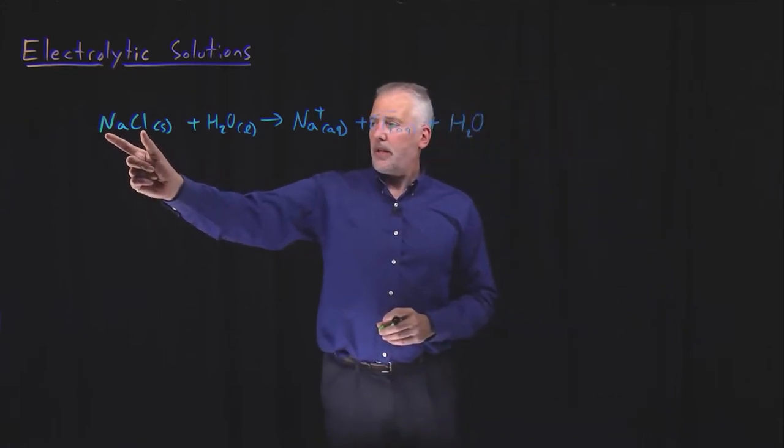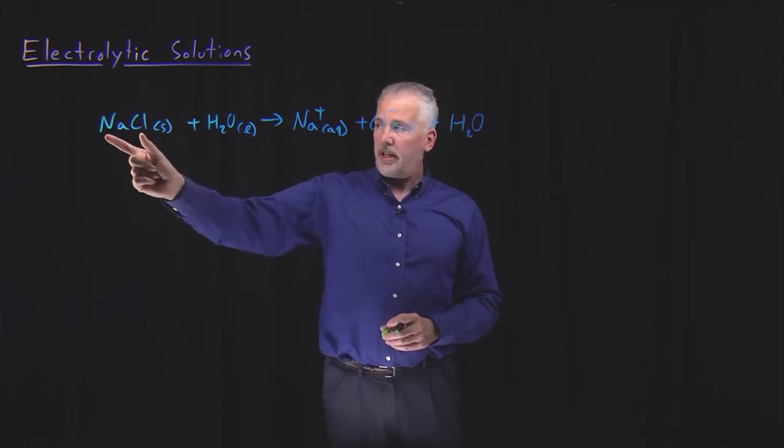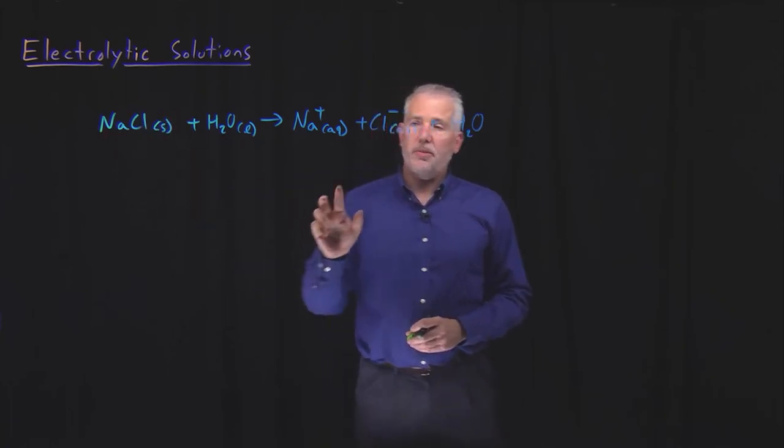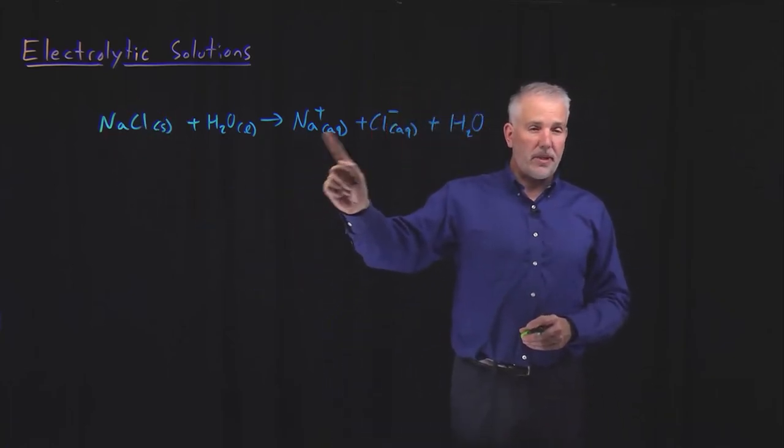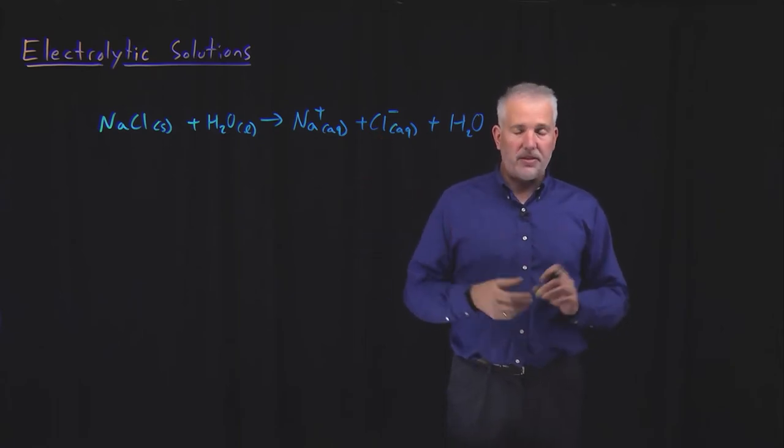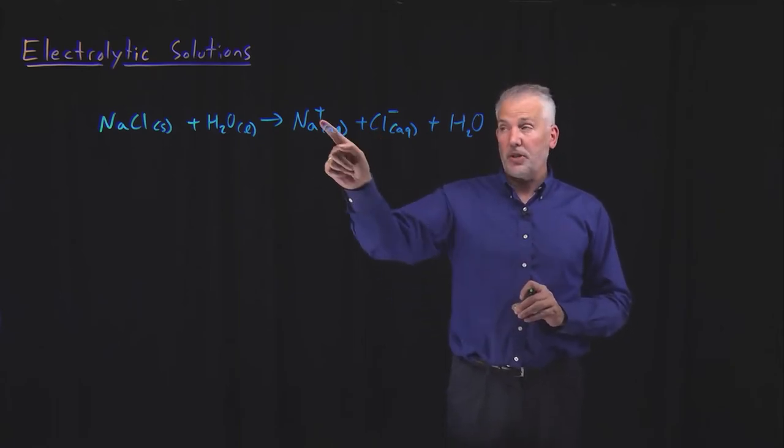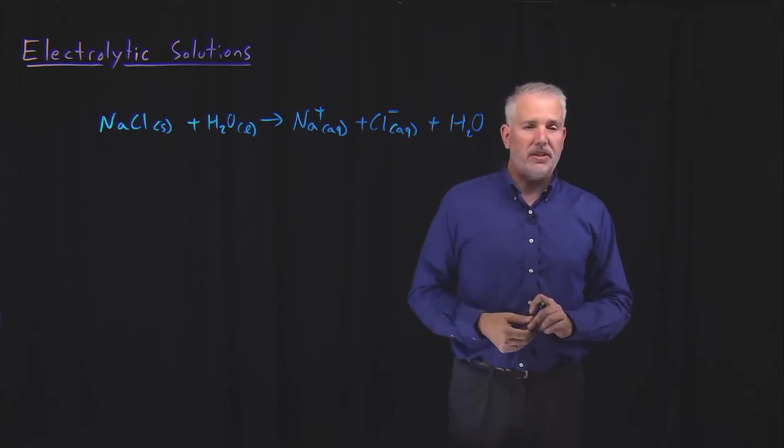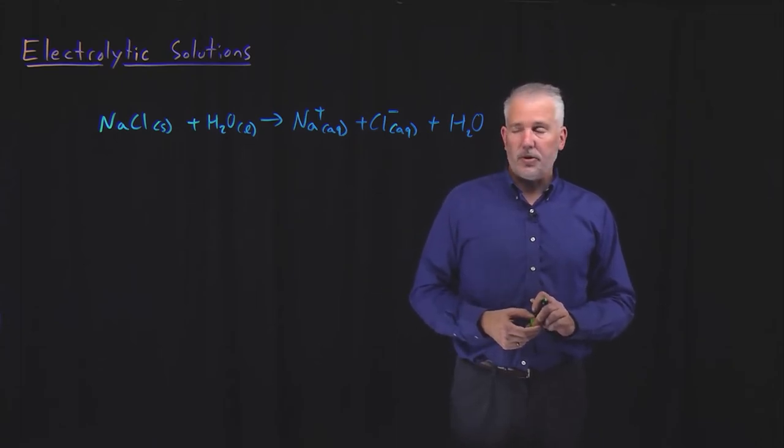Point being that my sodium chloride as a solid has become two different species, sodium ions and chloride ions in solution. The fact that it dissociates in solution makes it an electrolytic, dissociates into ions in solution makes it an electrolytic solute.